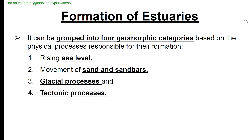Formation of estuaries can be grouped into four geomorphic categories based on the physical processes responsible: rising sea level, movement of sand and sandbars, glacial processes, and tectonic processes.